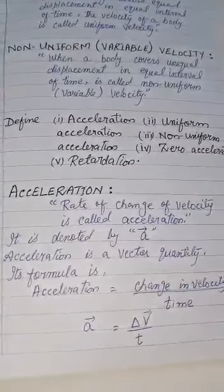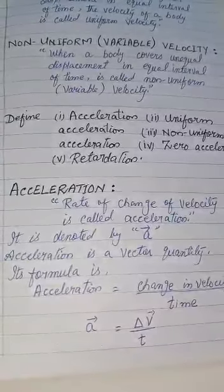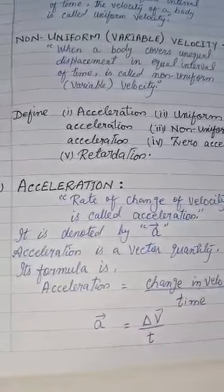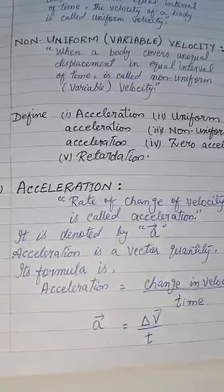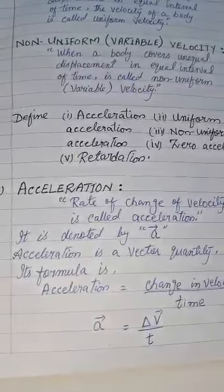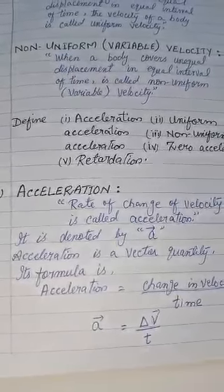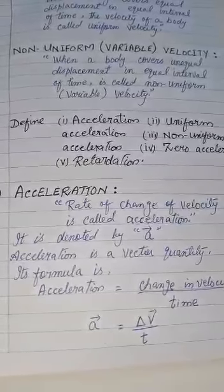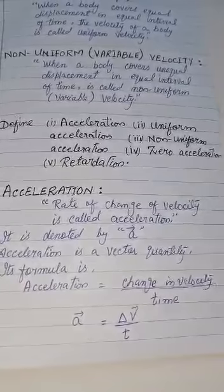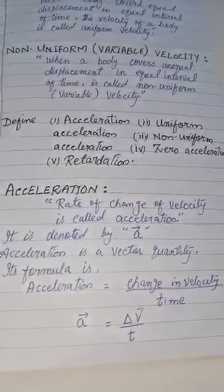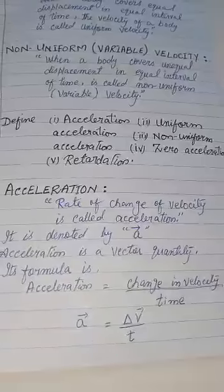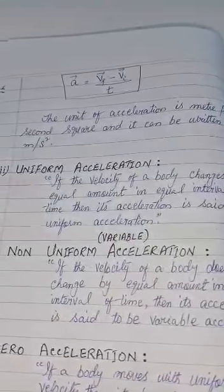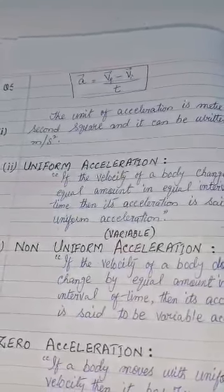The rate of change of velocity is called acceleration. It is denoted by small 'a'. Acceleration is a vector quantity. Its formula is: acceleration = change in velocity / time, i.e., a = Δv / t, or a = (vf − vi) / t.